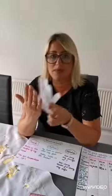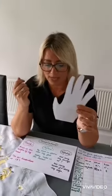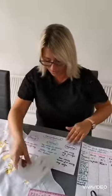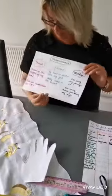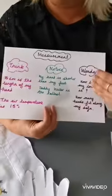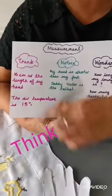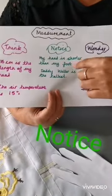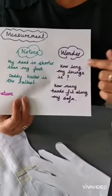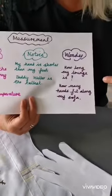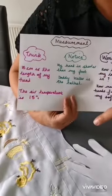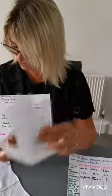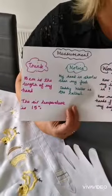This is my hand — it looks quite big, but it actually is my hand. What I've done is a little bit of an experiment. Looking at my sheet, I have thought of three different areas: what I think about measurement when I've used my hand, what I notice — things you can see around you — and what you wonder about, things that you'd like to know. So I think 15 centimetres is the length of my hand — I haven't actually measured it, but it's what I think. I also think the air temperature today is about 15 degrees.